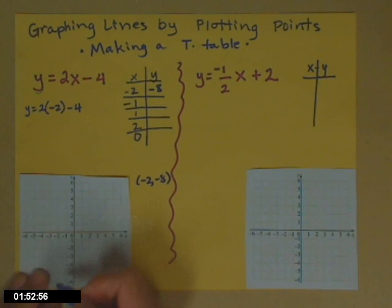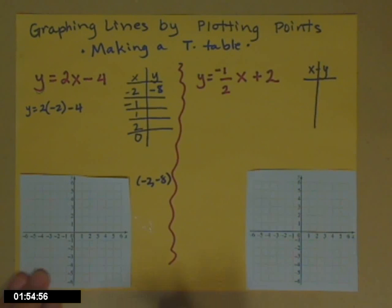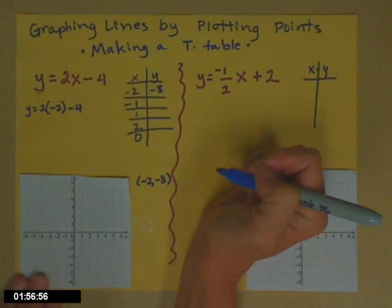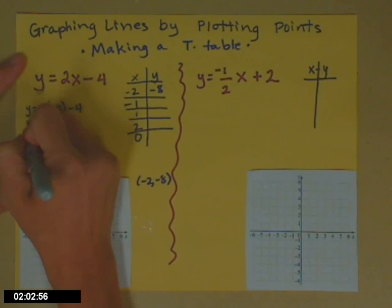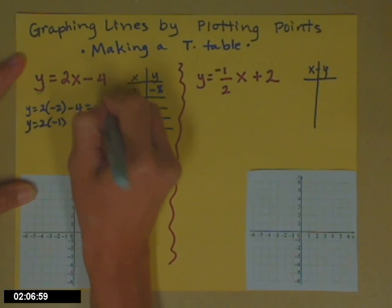So negative 2, negative 8's off my page. It's down here somewhere. Okay, let's get the next one. If x is negative 1, what's its y partner? So we're going to plug a negative 1 in this time. So 2 times negative 1, go ahead and finish that off, minus 4.